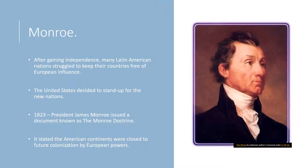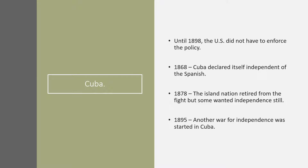In terms of the United States, after gaining independence many Latin American nations struggled to keep their countries free of European influence, whether militarily or economically. The United States decided to stand up for the new nations. In 1823, President James Monroe issued the Monroe Doctrine, which stated that the American continents were closed to further colonization by European powers. Until 1898, the US really didn't enforce the Monroe Doctrine or any related policy.